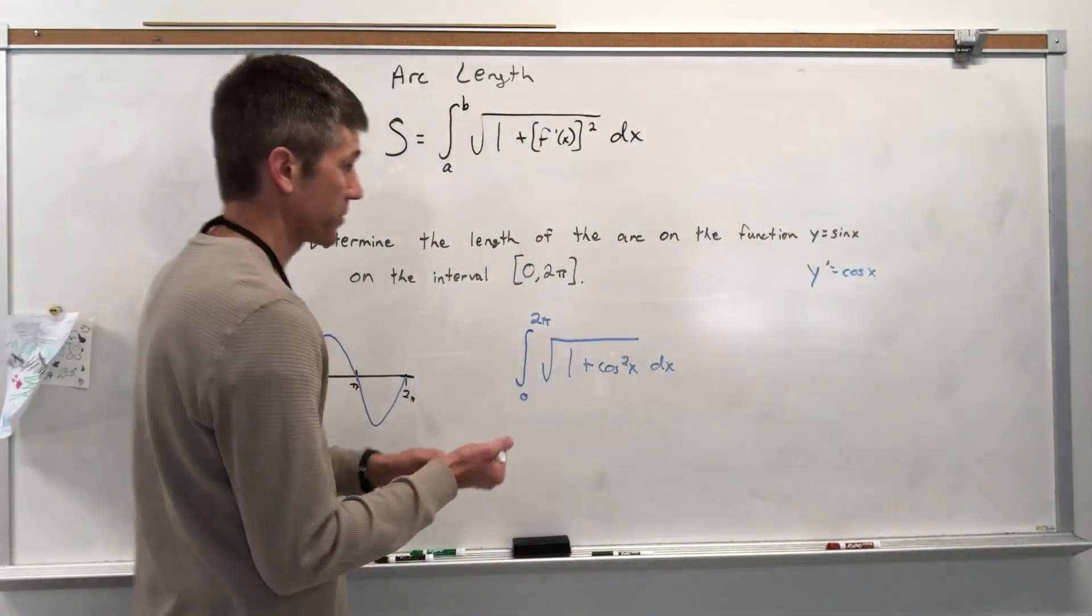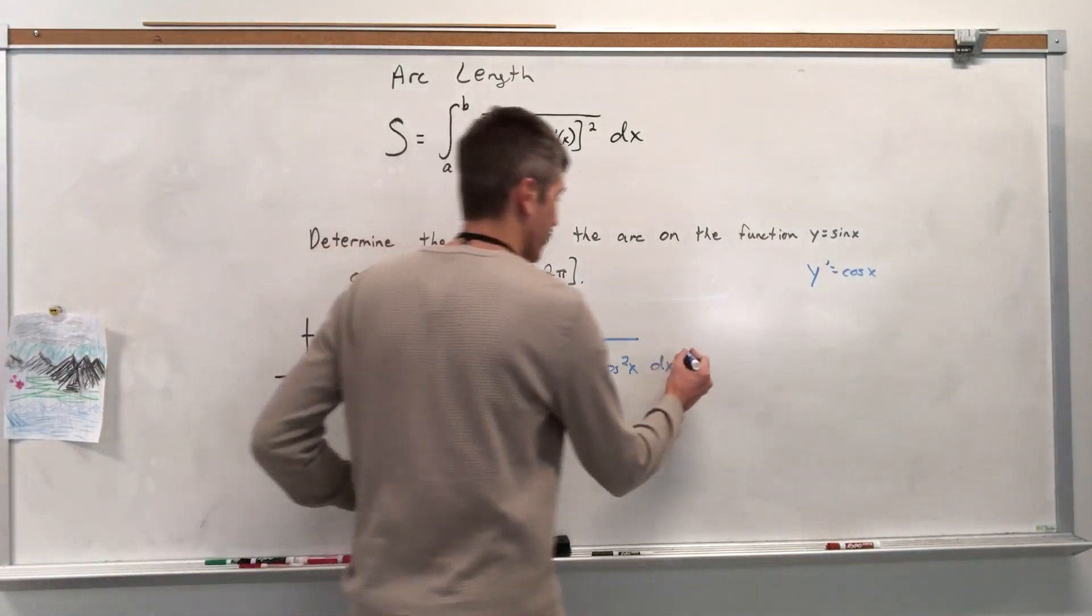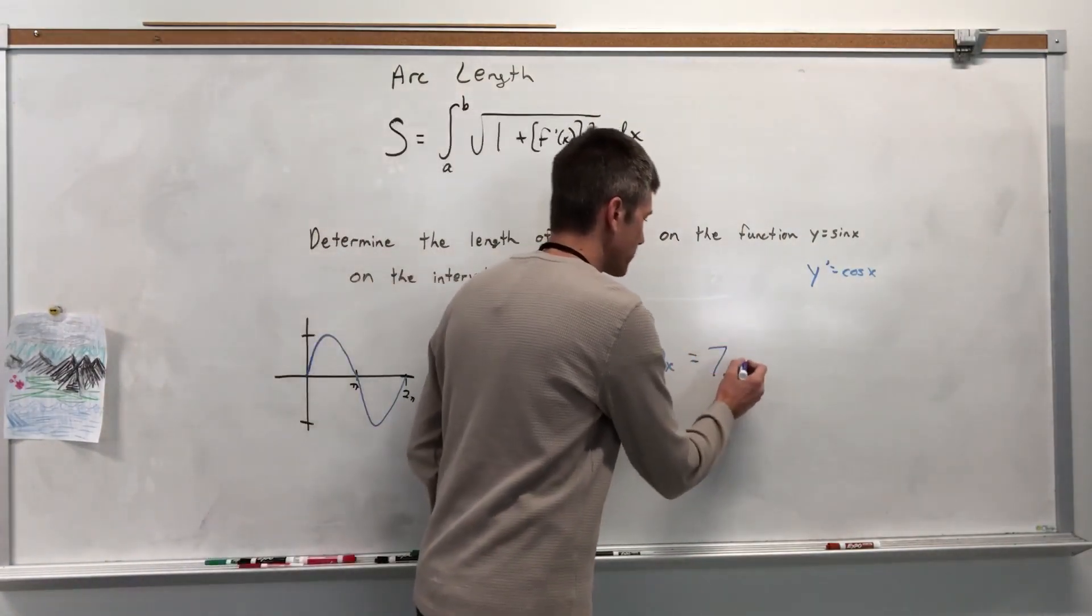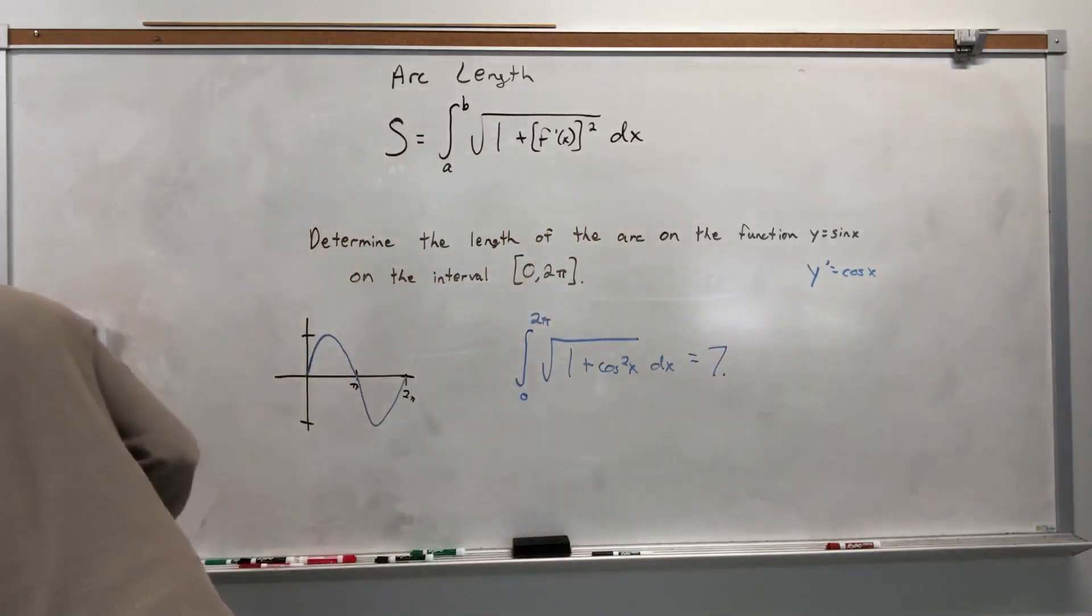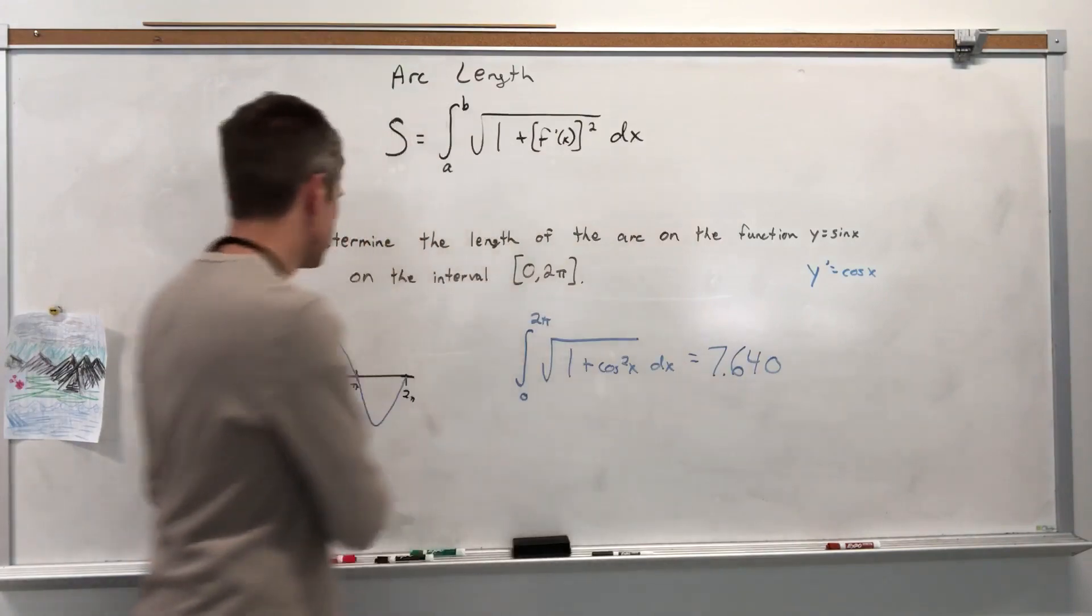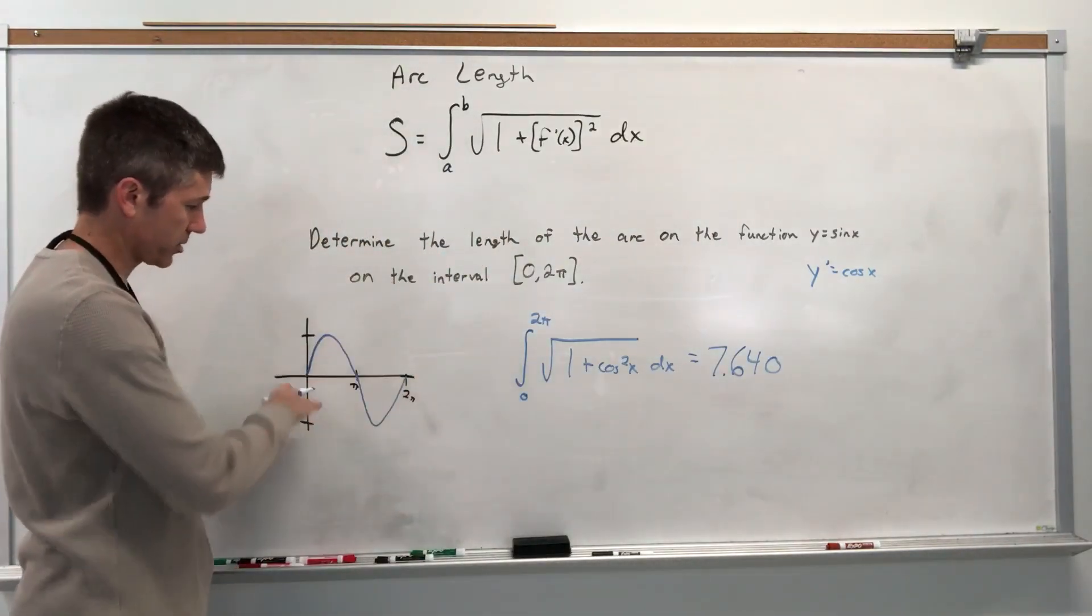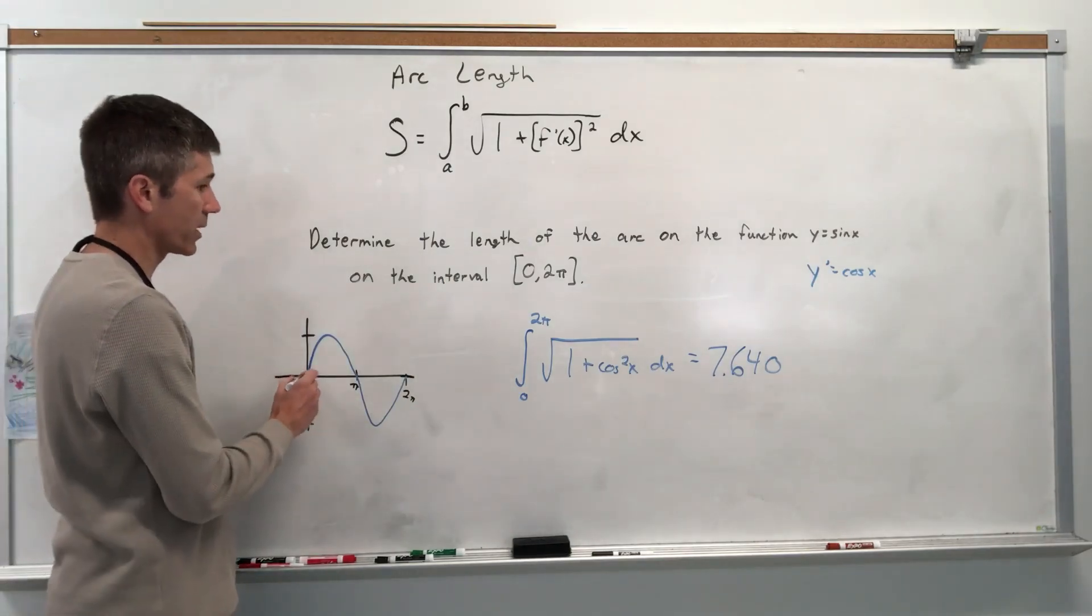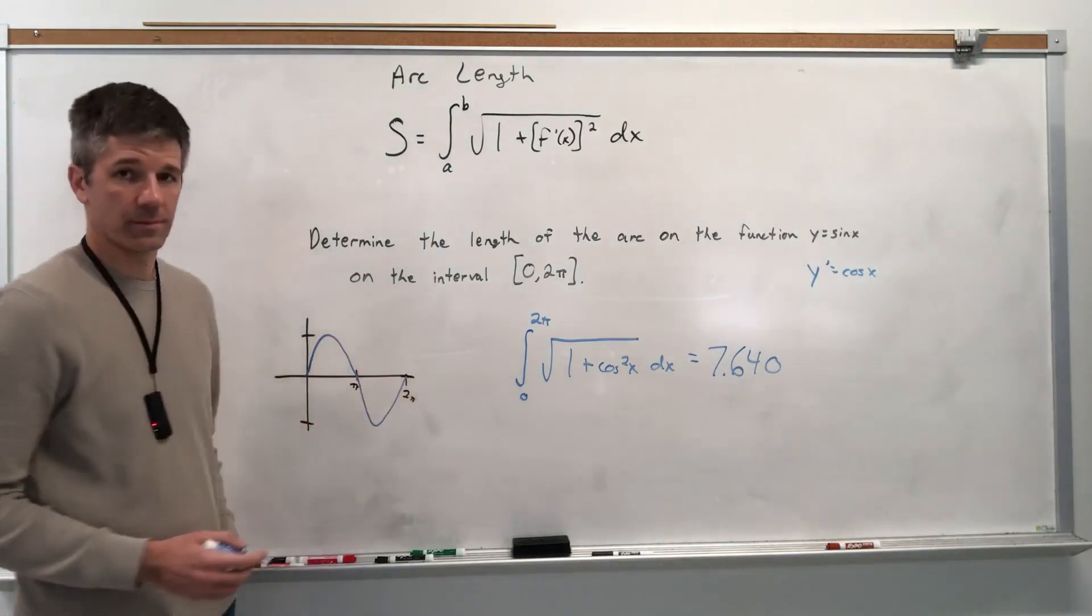I said it was 7-something because I had done this question before, so I remembered that the answer was that. So it's not like I can do this in my head. 7.640. So again, if this was miles, and there's something doing like this, there's a train that runs like that, which is a weird way for a train to run, it would really be running 7.640 miles.